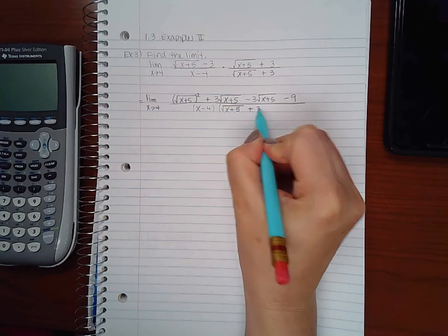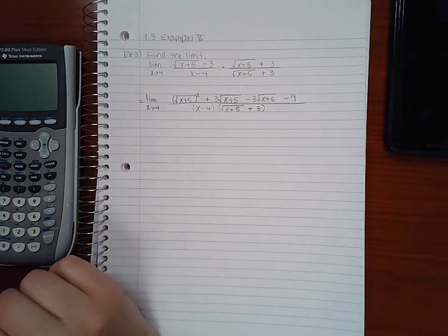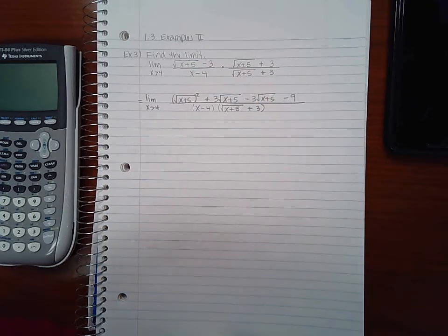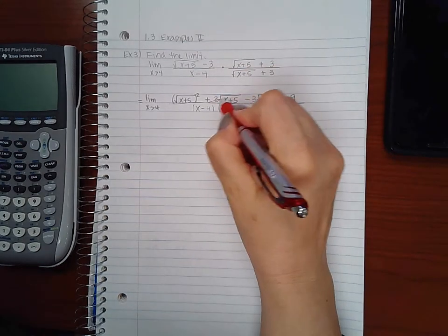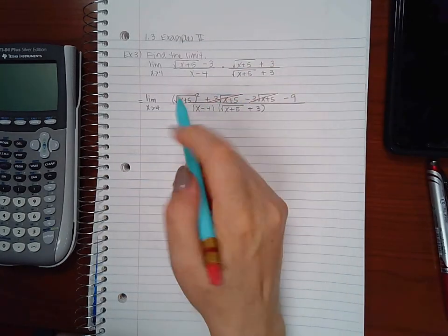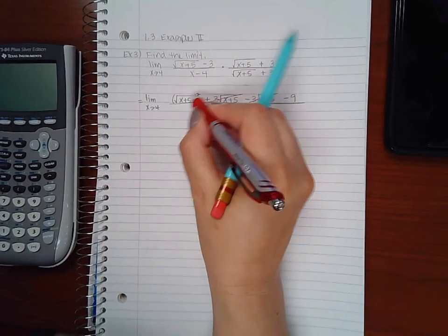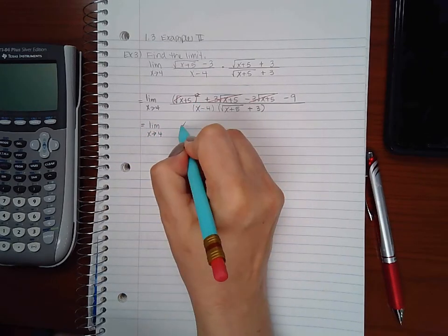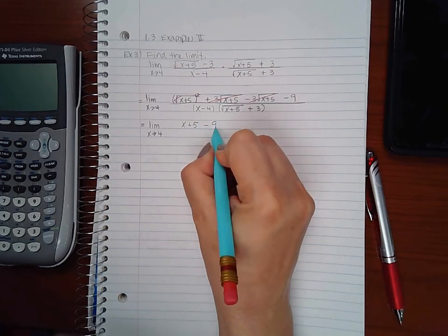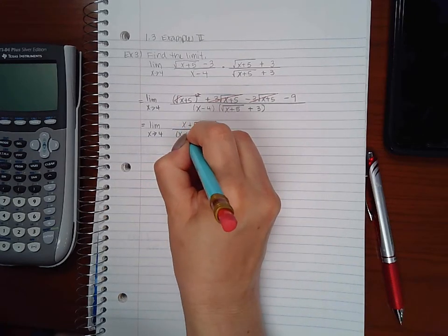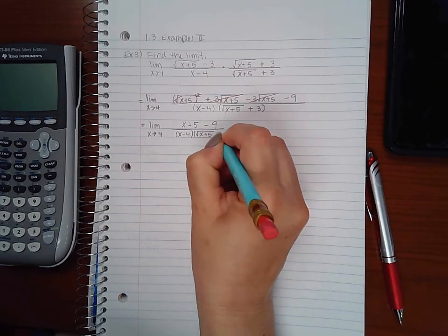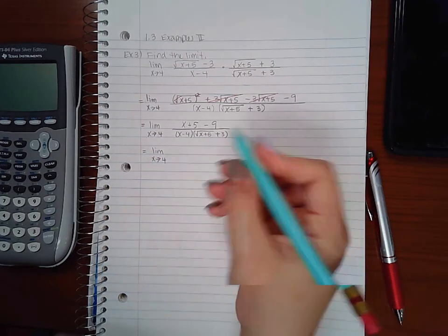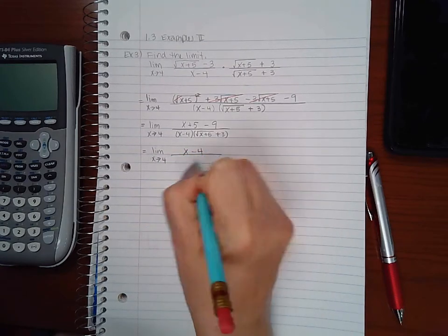So let's see what we have when we just rewrite these two factors together in the denominator. In the numerator, you have plus 3 square root of x plus 5 and minus 3 square root of x plus 5. Well, those terms will cancel each other out. And also, when you have the square root of x plus 5 squared, those are going to undo each other. So what I'm going to end up with in my numerator is just x plus 5 and then minus 9. My denominator is still going to have both of those factors. And if I continue simplifying what I have in the numerator, I will get x minus 4 in the numerator.